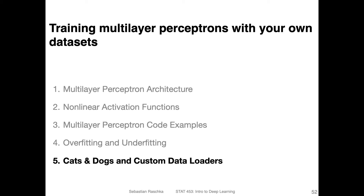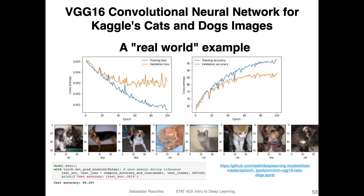Let's talk about cats and dogs and custom data loaders. I added cats and dogs to make this a bit more interesting, because if you just read 'data loaders' or 'custom data loaders,' it doesn't sound so exciting by itself. So I was using that just to get your attention. What I'm showing you is a cats and dogs classifier I trained from a Kaggle dataset — a VGG16 convolutional network that we will discuss later in the convolutional network lecture.